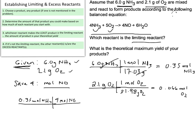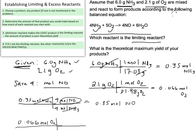I have 4 moles of NO over 4 moles of NH3. Notice I'm showing how I converted from one substance to the other — you need to make sure you're always doing this. So 0.35 times 4 divided by 4 gives the same answer, 0.35 moles of NO. Repeating this process for oxygen, the mole ratio is 4 moles of NO to 5 moles of O2. Calculating that out gives us 0.053 moles of NO.